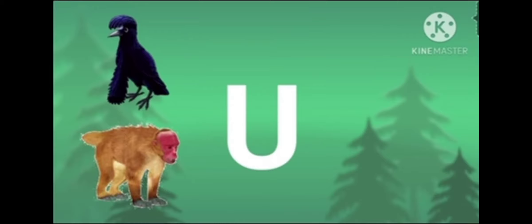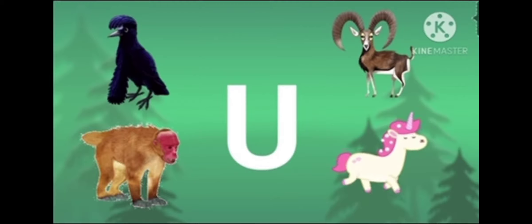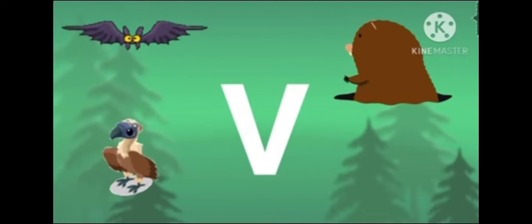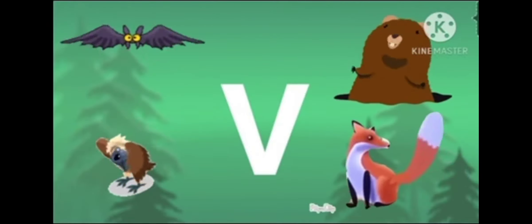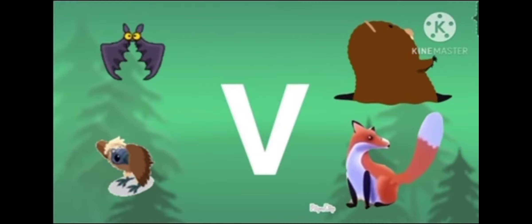U is for umbrella bird, wakari and furiel. U is for unicorn, the mythical beast. V is for vampire bird, vulture and vole. V is for vixen, a female fox.